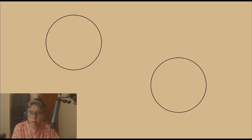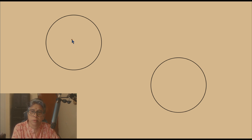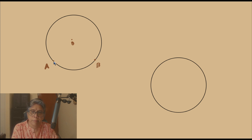We have a circle here. Let O be the centre of this circle, so this is the centre O. Now let us say that we have two points A and B on this circle, and AB is a minor arc of the circle because it is smaller in length. This is called the minor arc of the circle.